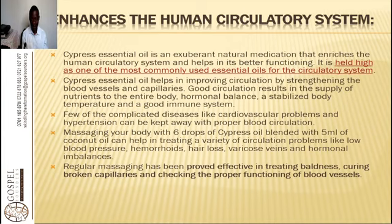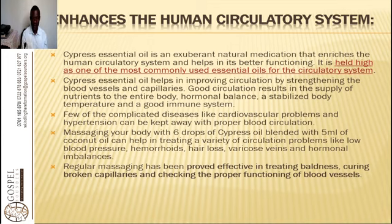Cypress essential oil enhances the human circulatory system. It is an exuberant natural medication that enriches the human circulatory system and helps in its better functioning. It is held high as one of the most commonly used essential oils for the circulatory system. Cypress essential oil helps in improving circulation by strengthening the blood vessels and capillaries. Good circulation results in the supply of nutrients to the entire body, hormonal balance, a stabilized body temperature, and a good immune system.